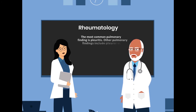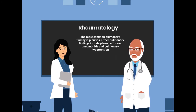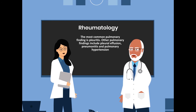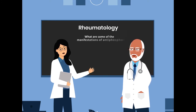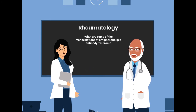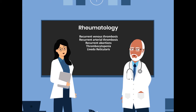What is the most common pulmonary finding in a patient with lupus? The most common pulmonary finding is pleuritis. Other pulmonary findings include pleural effusion, pneumonitis, and pulmonary hypertension.